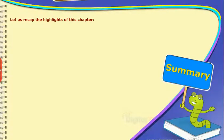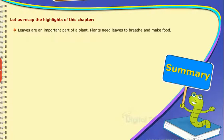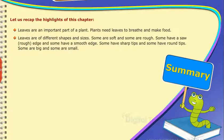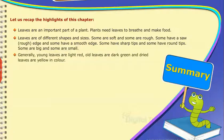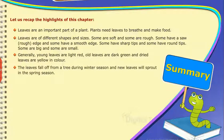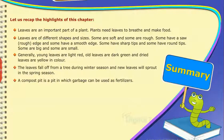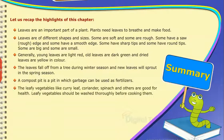Summary — let us recap the highlights of this chapter. Leaves are an important part of a plant. Plants need leaves to breathe and make food. Leaves are of different shapes and sizes — some are soft and some are rough, some have a saw or rough edge and some have a smooth edge, some have sharp tips and some have round tips, some are big and some are small. Generally, young leaves are light red, old leaves are dark green and dried leaves are yellow in color. The leaves fall off from a tree during winter season and new leaves will sprout in the spring season. A compost pit is a pit in which garbage can be used as fertilizer. Leafy vegetables like curry leaf, coriander, spinach and others are good for health, and should be washed thoroughly before cooking.